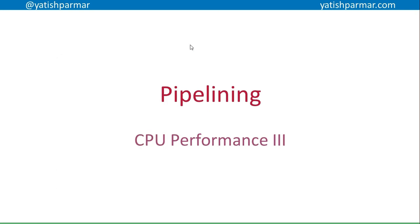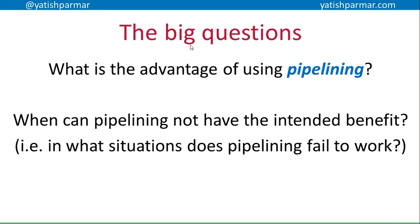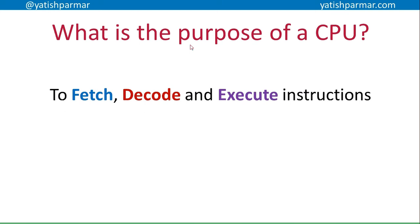This is the third video for CPU performance — the A-level one. You should have gone through the two previous videos for your AS on cache, clock speed, cores, word size, and the impact of bus width — address bus and data bus. This video is about pipelining and looking at what the advantage of using pipelining is. If you can answer the second question — when pipelining fails — then you have a great in-depth understanding of how pipelining works.